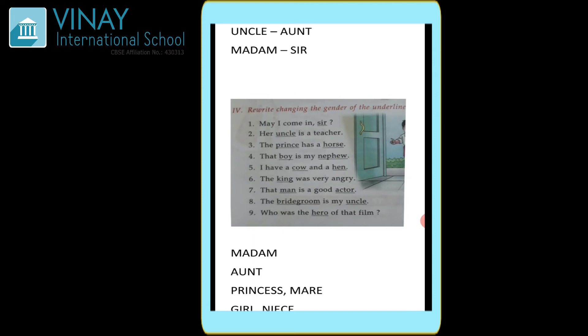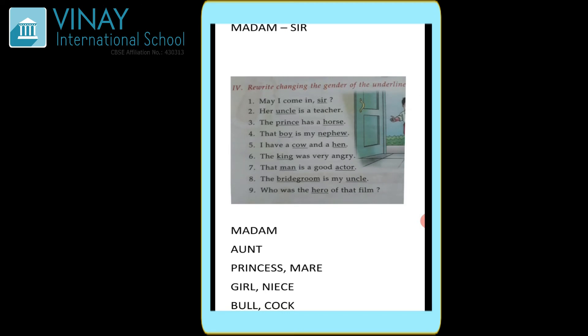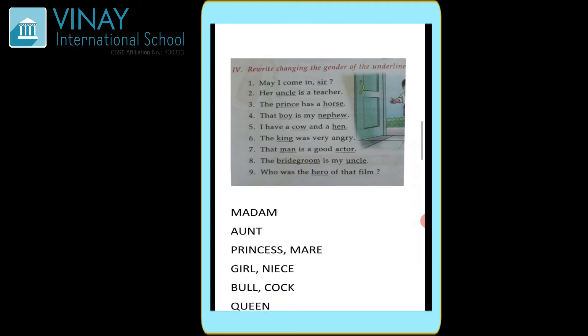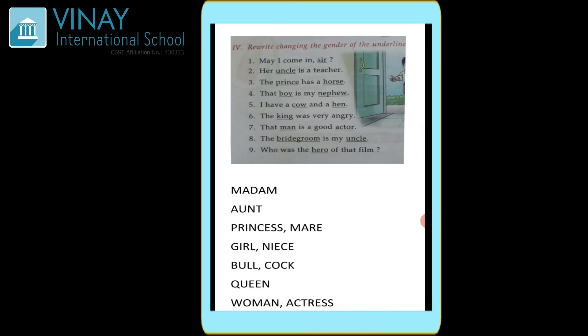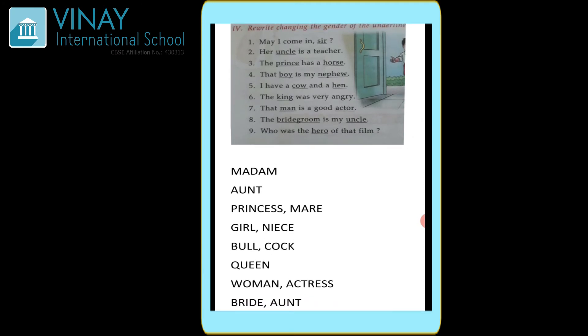Moving on to the next question: rewrite changing the gender of the underlined words. The first is 'May I come in, sir?' — toh sir ka kya ho jaega — madam. Madam is a feminine form. Second is 'Her uncle is a teacher' — uncle hai masculine, toh uncle ka feminine form kya ho jaega — aunt. Uncle ka opposite gender is aunt. Third is 'The prince has a horse' — yaha pe do words underline kiye gaye hai — prince and horse. Prince kya hai — masculine — toh uska feminine form ho jaega princess.